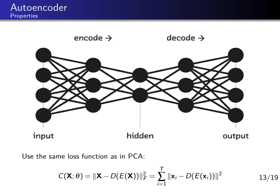First, let us look at the neural network architecture, which uses multi-layer perceptrons as elements of the autoencoder layers. The input and output dimensions are equal, so the autoencoder takes data with a certain input dimension, transforms it, and outputs data with the same dimension. In between, the autoencoder passes through a so-called latent space or hidden space, which has a smaller dimension, performing dimensionality reduction from large to small and then reconstructing back to large.